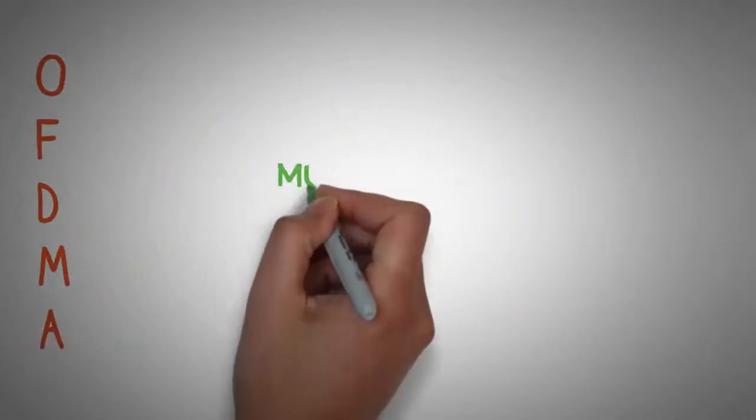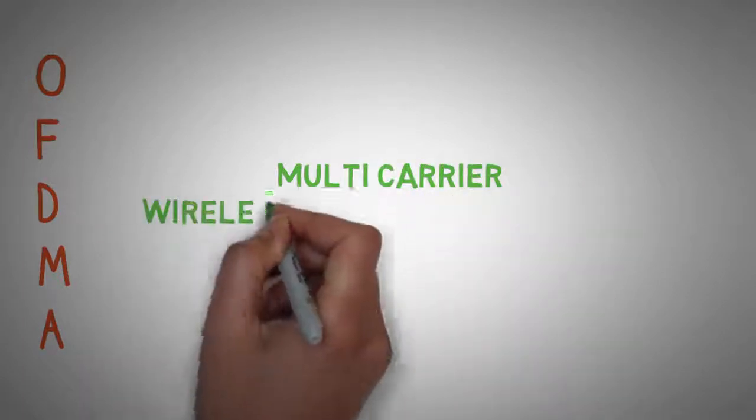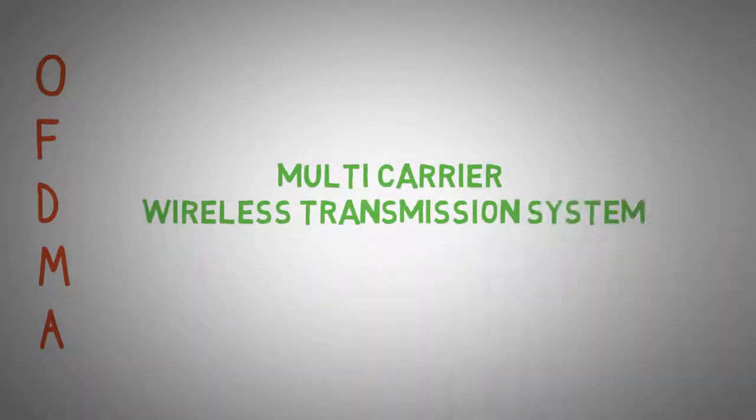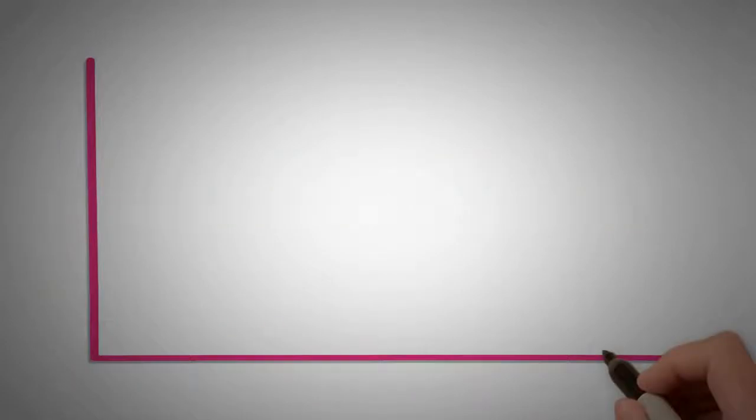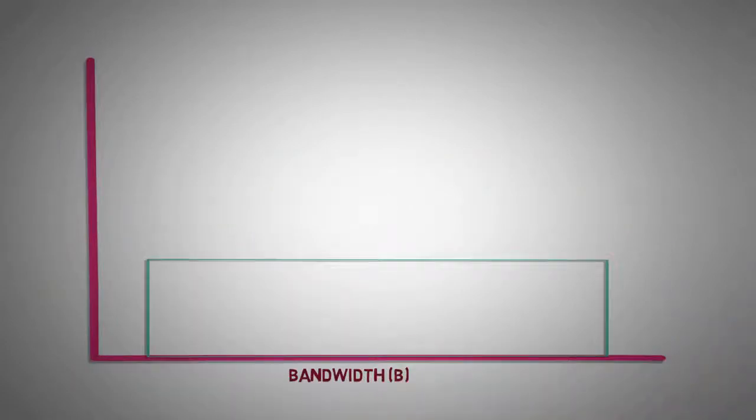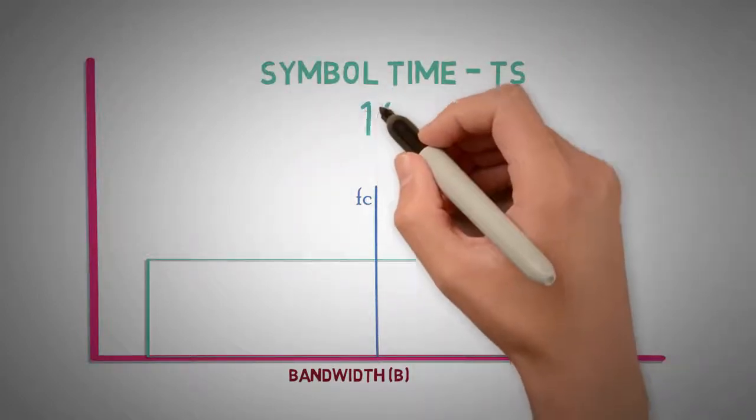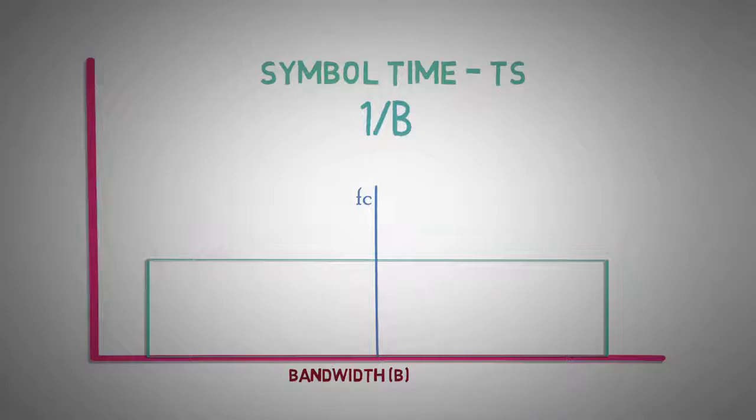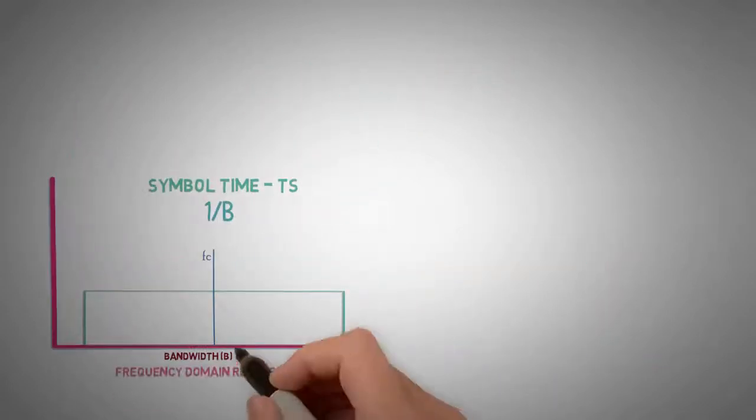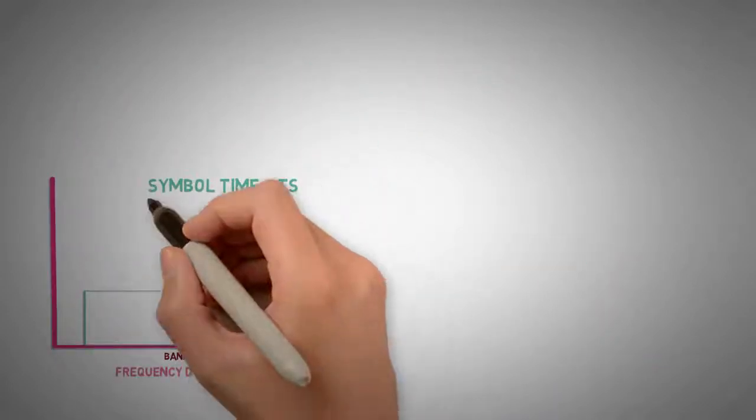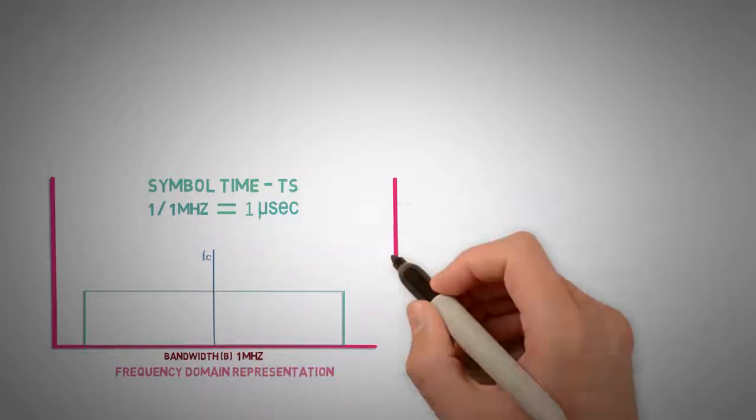Before diving into OFDMA let us understand multi-carrier wireless transmission system. Suppose a signal is to be transmitted over a bandwidth B and carrier frequency FC. Then symbol time for this would be TS equal to 1 by B. For a single carrier wideband channel of let's say 1 MHz, the symbol time will be 1 microsecond.